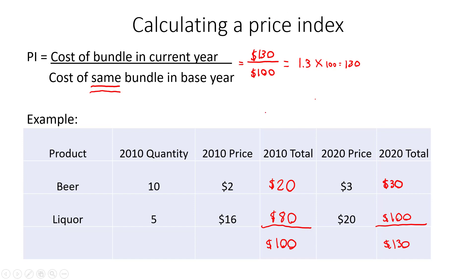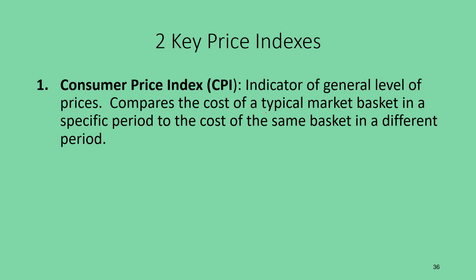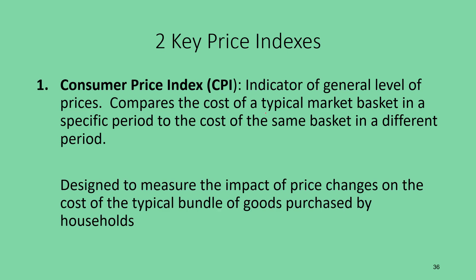The first type of price index is the Consumer Price Index, or CPI. It's an indicator of the general level of prices for consumers, comparing the cost of a typical market basket in one period to the same basket in another. It's designed to measure the impact of price changes on the cost of a typical bundle of goods purchased by households — things like beer, liquor, diapers, and toothpaste.